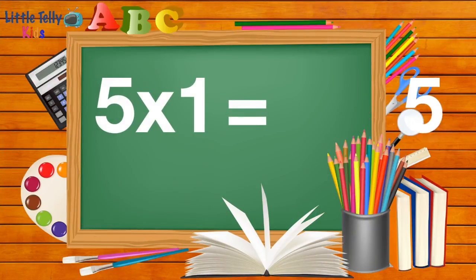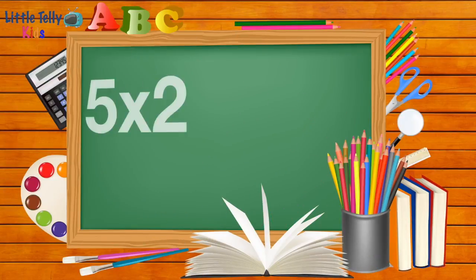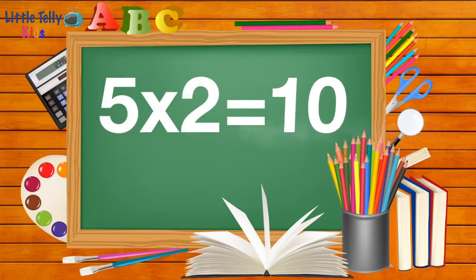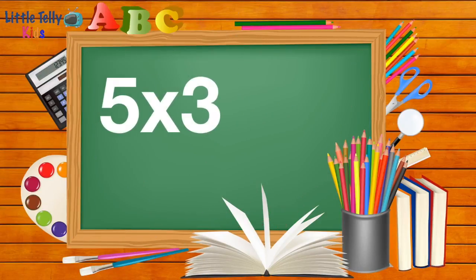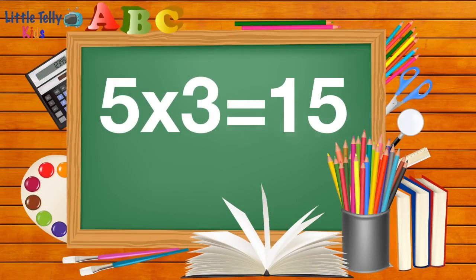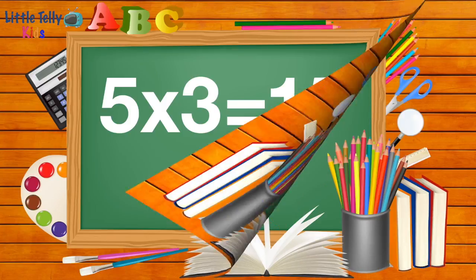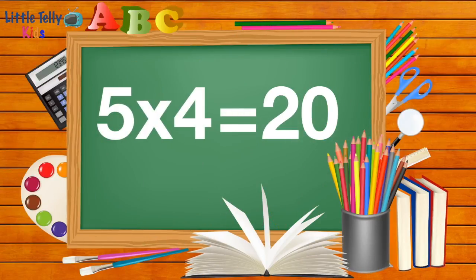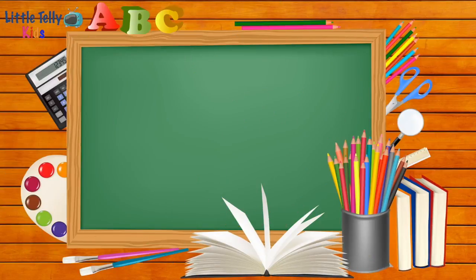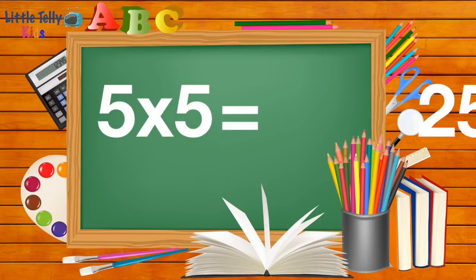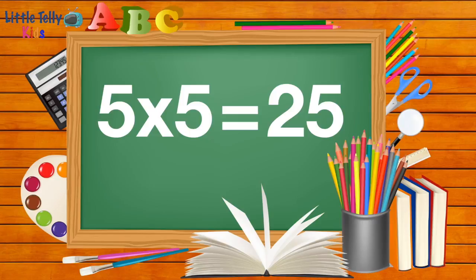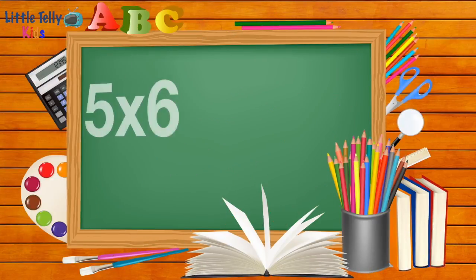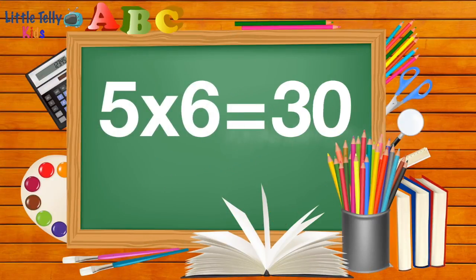5 ones are 5. 5 twos are 10. 5 threes are 15. 5 fours are 20. 5 fives are 25. 5 sixes are 30.